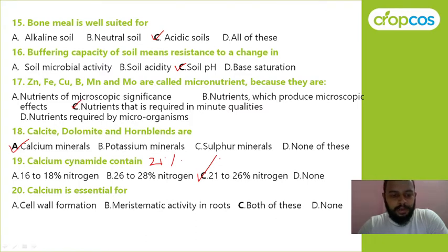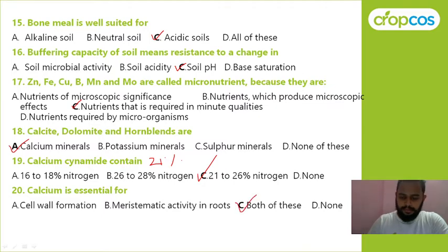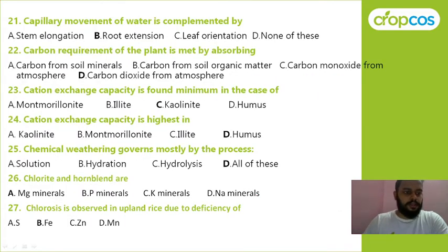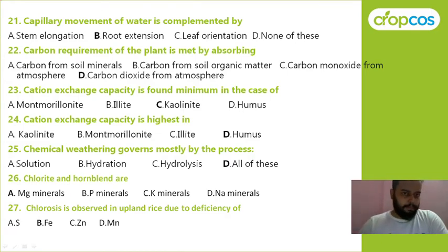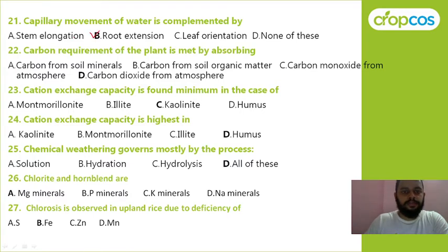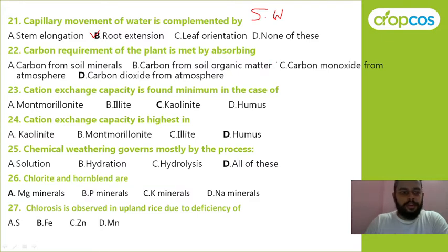Calcium is essential for cell wall formation, meristematic activity in roots, both, or none of these? Next: capillary movement of water is complemented by stem elongation, root extension, leaf, or none of these? This is from the soil water chapter. Carbon required by plants is met by absorbing carbon dioxide from the atmosphere — that is option D.